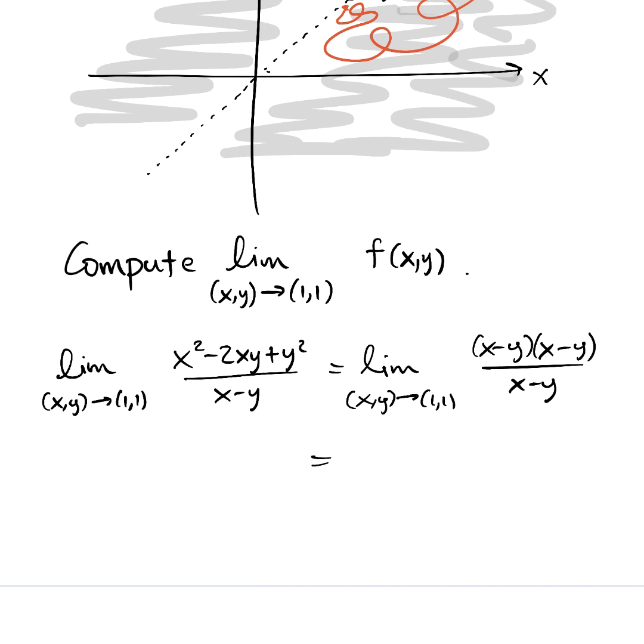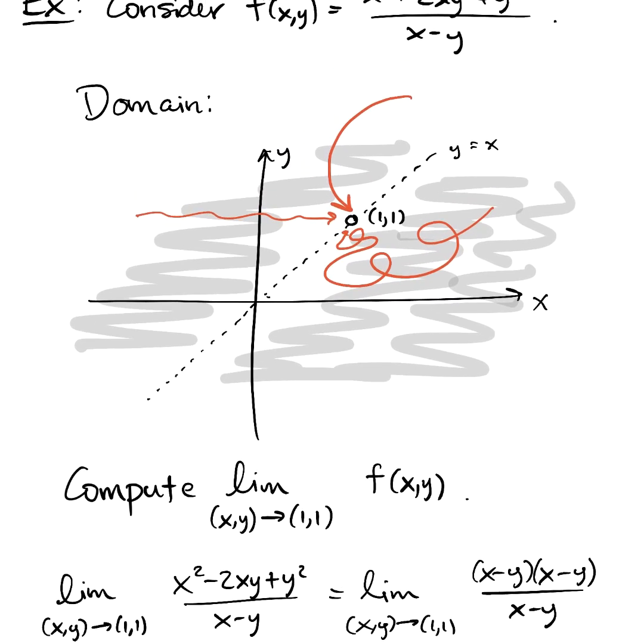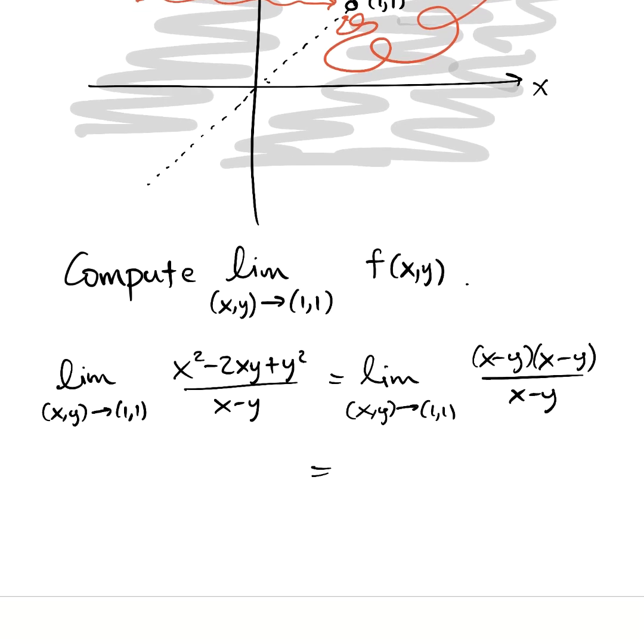And now the beauty with limits is you're never saying x comma y is actually equal to 1, 1. It's just really, really close. You're marching along one of these red paths, closer and closer to 1, 1. But you never get there when you consider the limit. And so x minus y isn't literally zero, it's just tiny. Therefore, we are free to cancel top and bottom.